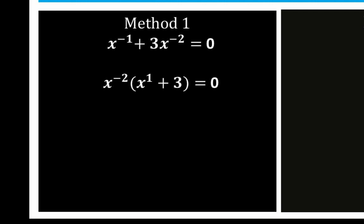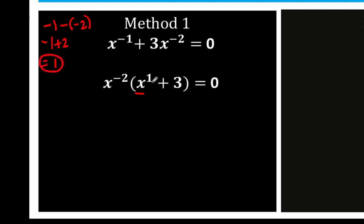The common factor is x raised to negative 2. By factoring out x raised to negative 2, we get the other factor by dividing x raised to negative 1 by x raised to negative 2. Since we are dividing exponential numbers with the same base, we copy the base x and subtract the exponents: negative 1 minus negative 2 equals negative 1 plus 2, which equals positive 1. So we now have x raised to positive 1.